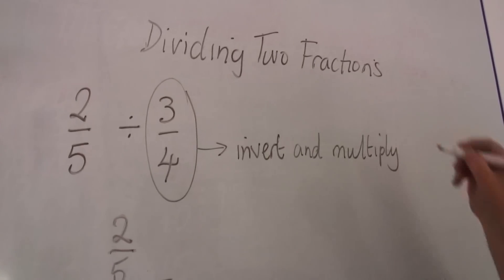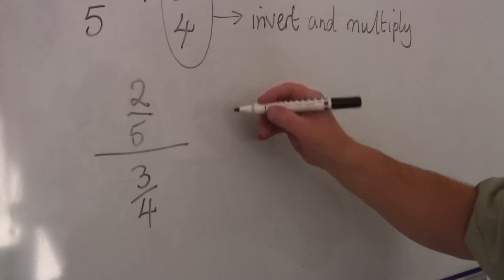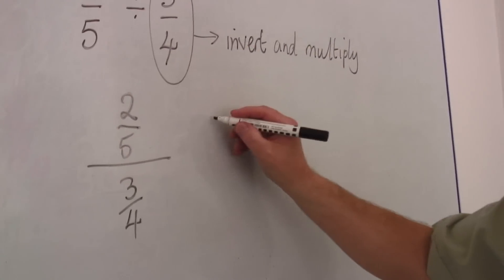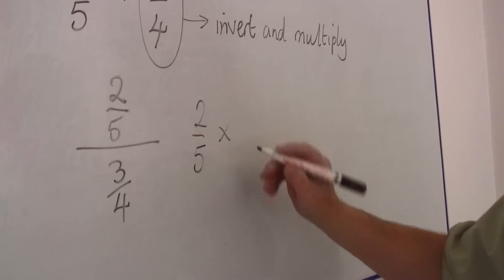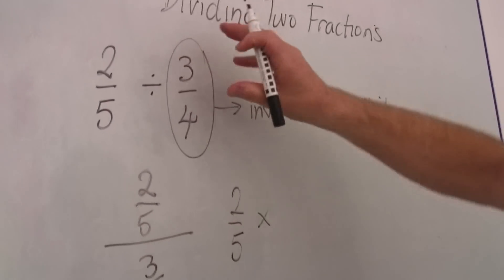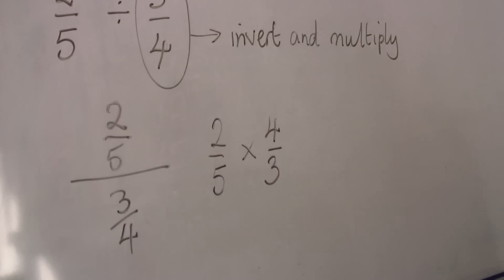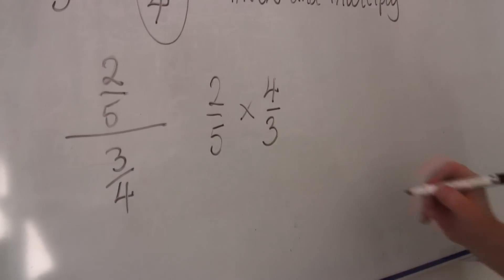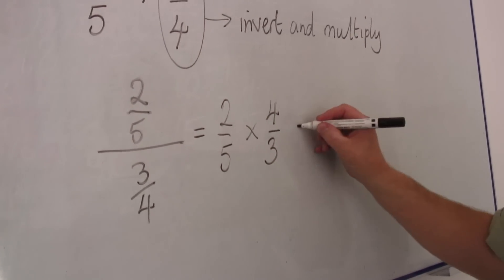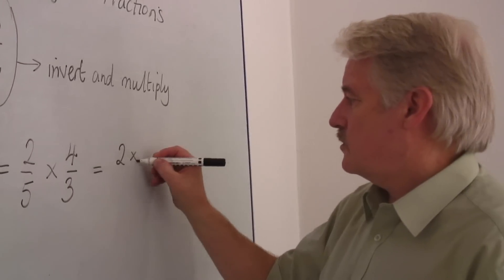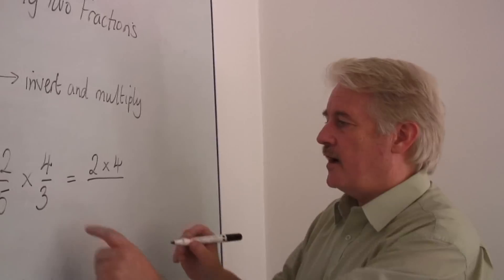Now let's see what that gives us. So instead of doing this, I simply do two fifths, but I multiply by this inverted, four over three. Now we know that this expression is the same as two times four on the top, and on the bottom five times three.